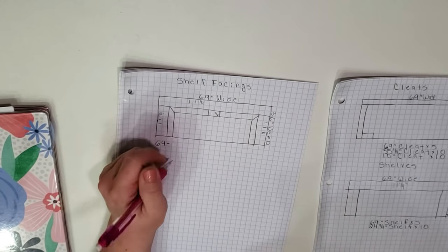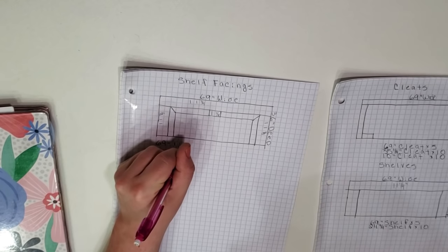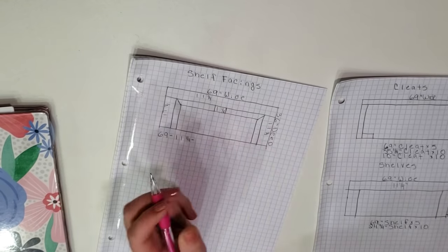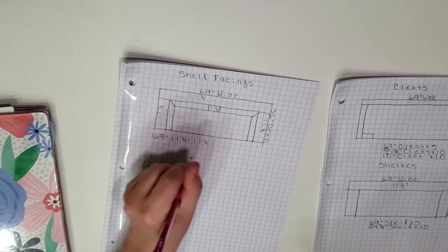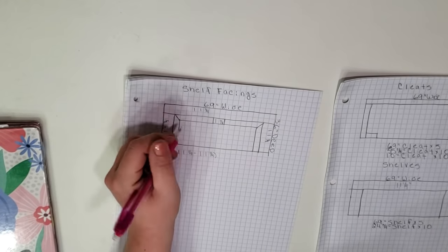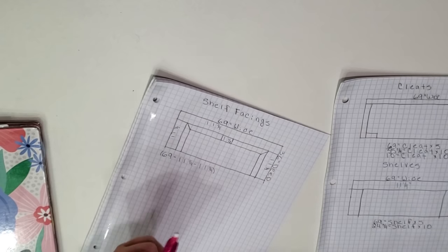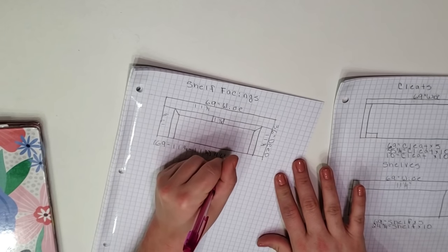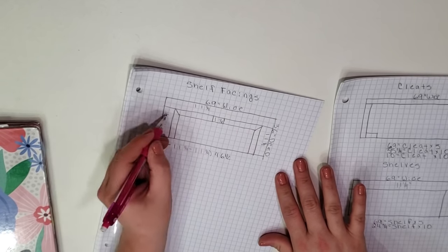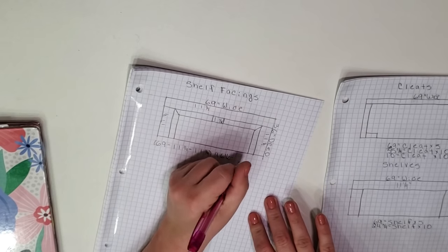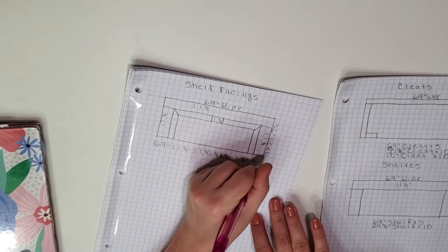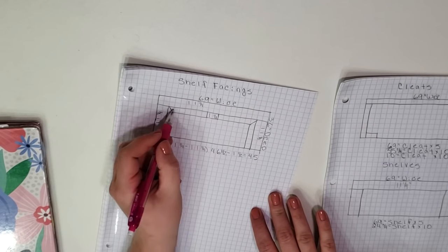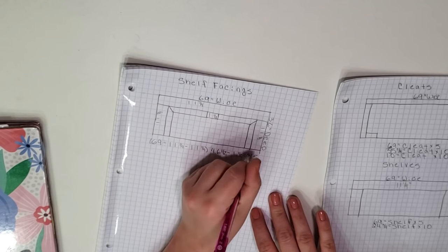For this you want to measure the dimensions of the front edge of the shelves. My back shelf is 69 inches wide minus the 11 and a quarter inches from both of the side shelves leaves me with 46 and a half inches of exposed front edge on that back shelf. I will be adding a middle support bar that is one and a half inches wide so I subtract that and that leaves me with 45 inches.